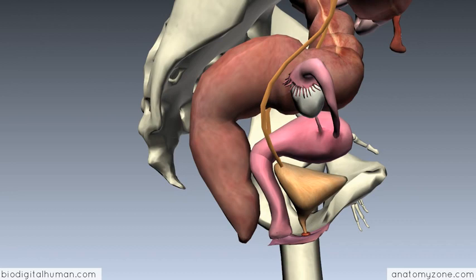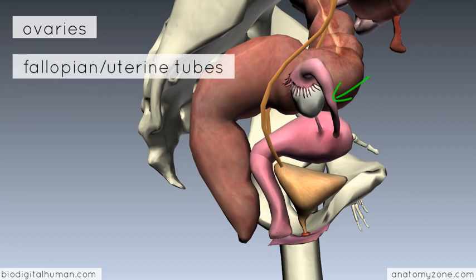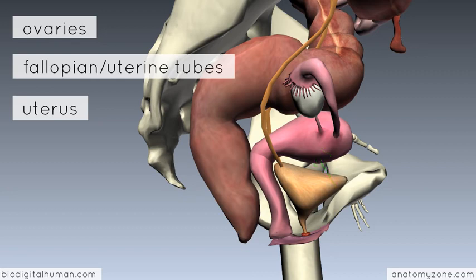The main parts covered are the ovaries, which are the primary female sex organ, and then the fallopian tubes — or uterine tubes as they're also known — which connect to the uterus. The uterus is a muscular sac where the embryo develops into a fetus and then into a baby. And then you've got the vagina, which opens up in the perineum.